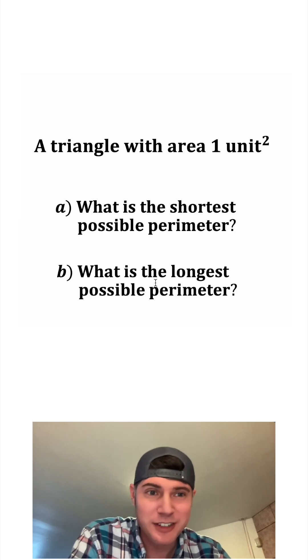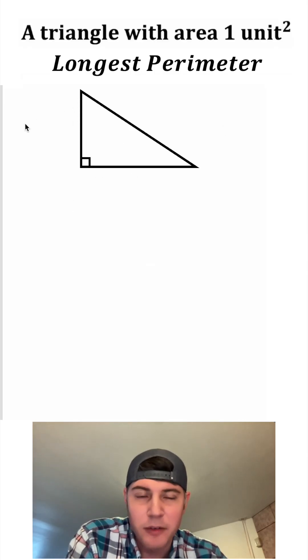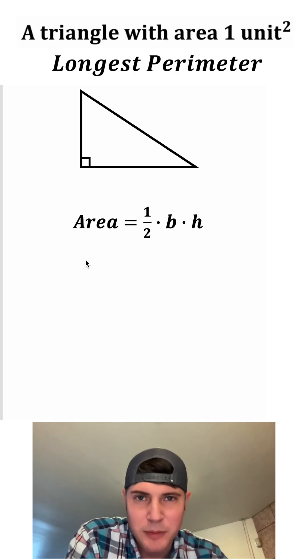Well, here's a video going over the answers. First, let's find the longest possible perimeter. Let's start with the triangle. In this case, I have a right triangle here and the area is gonna be one half base times height.